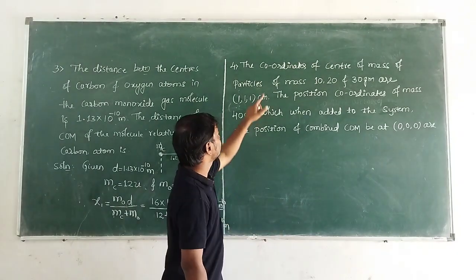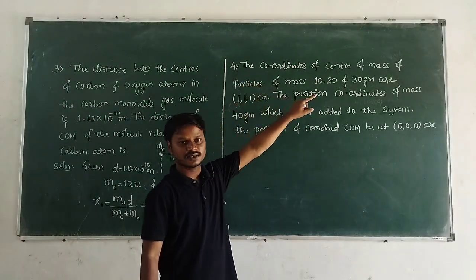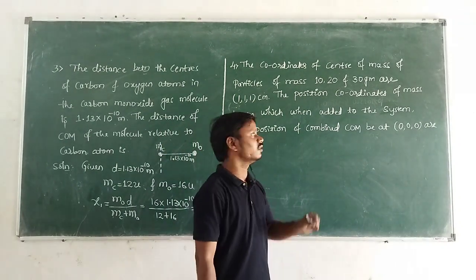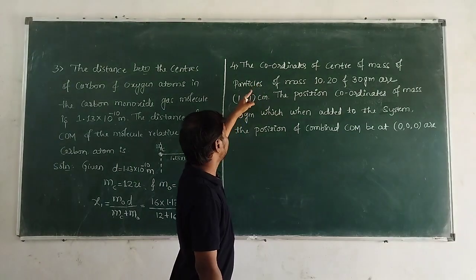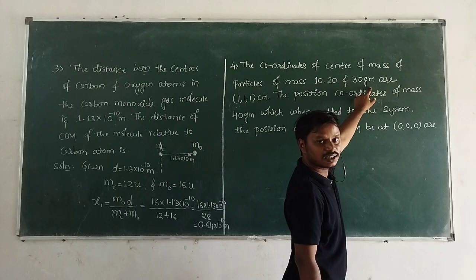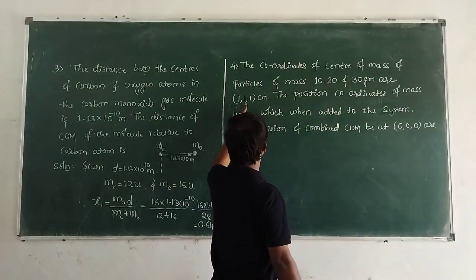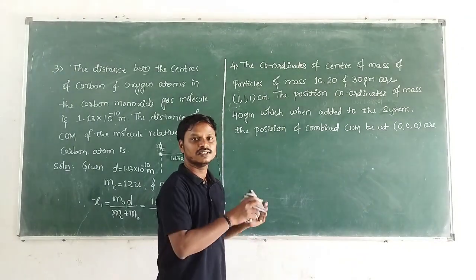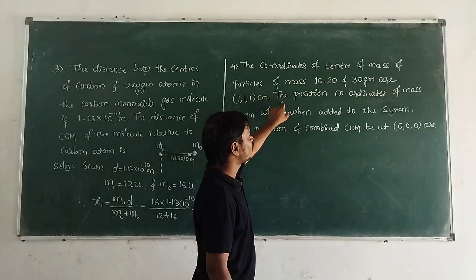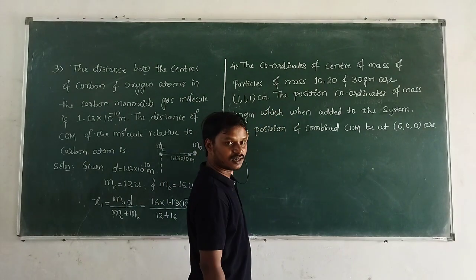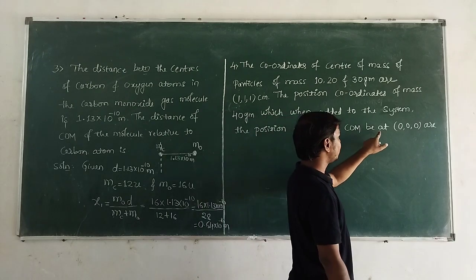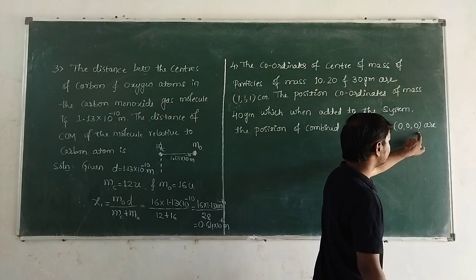What is the fourth question? The coordinates of center of mass of particles of mass 10, 20, and 30 gram are given as (1, 1, 1) centimeter — so XCM = 1, YCM = 1, ZCM = 1. The position coordinates of the mass 40 gram, when added to the system, make the position of the combined center of mass be at (0, 0, 0).